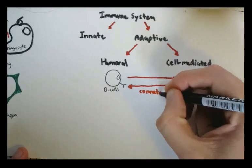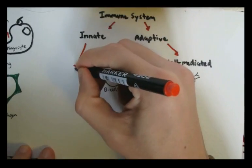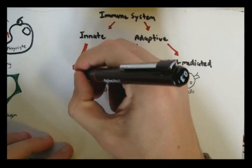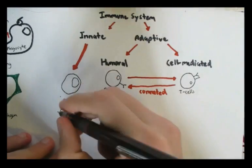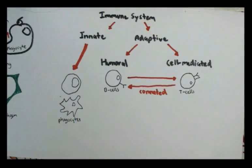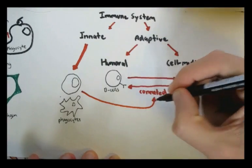Actually, the cells of the innate immunity, such as the phagocytes and antigen-presenting cells, also have to work together with the adaptive immunity. And we will see shortly how.